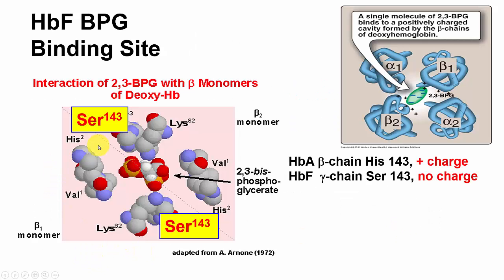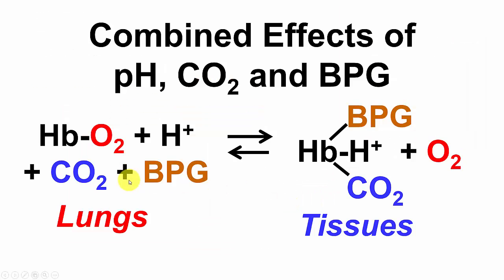Here again is the structure showing the BPG binding site. Normally you have histidines at these positions in the beta chain with positive charges, but in fetal hemoglobin those histidines are replaced by serines. Serines have no positive charge, so this reduces the positive charge in the binding site, reducing the binding of BPG to fetal hemoglobin. As a result, BPG has a lower affinity for fetal hemoglobin, giving fetal hemoglobin a higher affinity for oxygen.